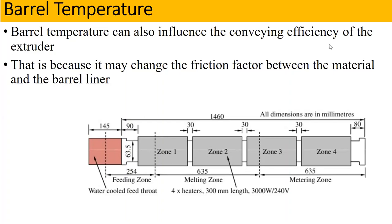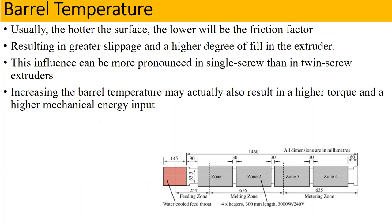This is a scientific phenomenon: when the surface is hot, you get less friction. When you get less friction, the product will get greater slippage and less restriction. The conveying section will carry out efficiently and our extruder will achieve a higher degree of fill. This phenomenon is more pronounced in single screw compared to twin screw extruders, where the heat exchange process is slightly different.